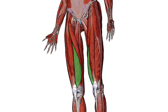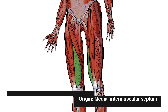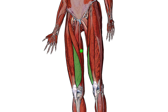Our last point of origin is the medial intramuscular septum of the thigh. This is a fold of deep fascia that lies between the vastus medialis muscle and the adductors and the pectineus. This separates the anterior compartment of the thigh from the medial compartment, as well as providing that origin point for the vastus medialis muscle.